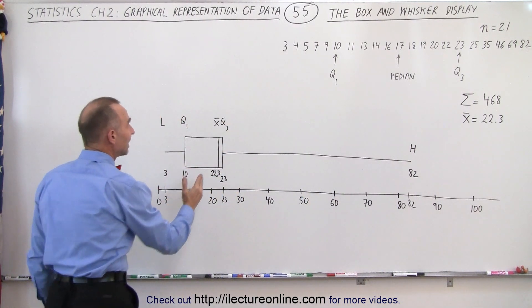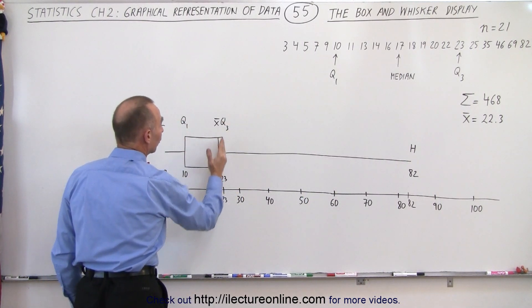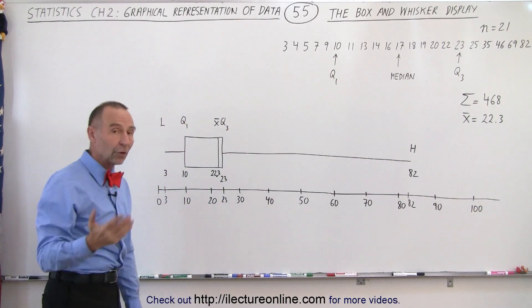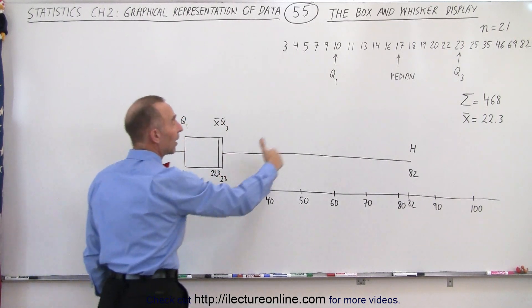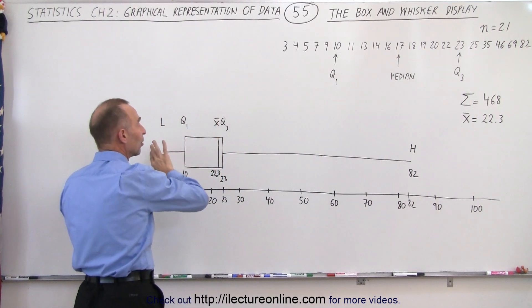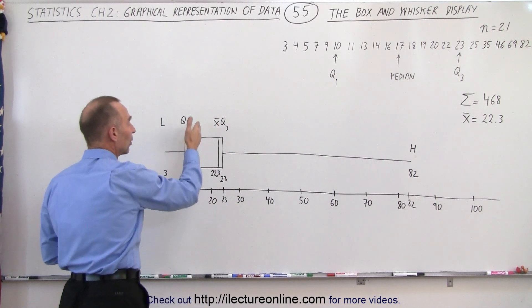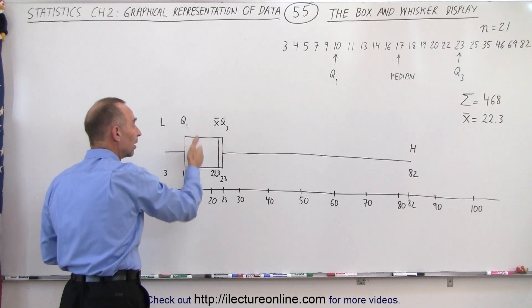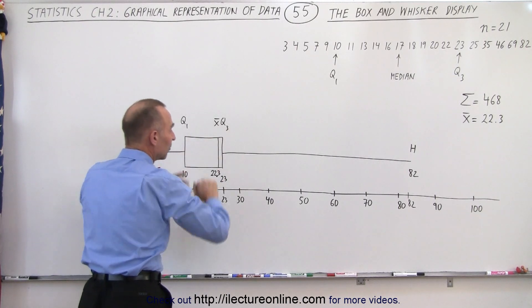Also notice that the average value is very close to the third quartile, which also means that some of those high outliers skewed the average value very much to the right, where you expect to find it more in the middle of the box. You see it very much to the right.